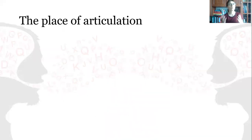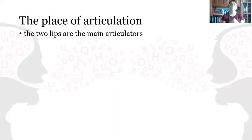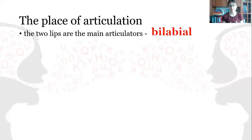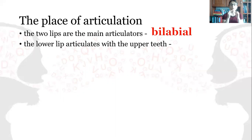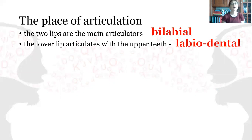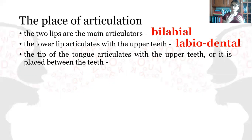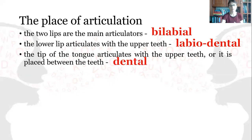What is to be said concerning the place of articulation? Quite a lot, actually. If the two lips are the main articulators, then we have a bilabial sound. If the lower lip articulates with the upper teeth, we have a labiodental sound. If the tip of the tongue articulates with the upper teeth or is placed between the teeth, we have a dental sound.